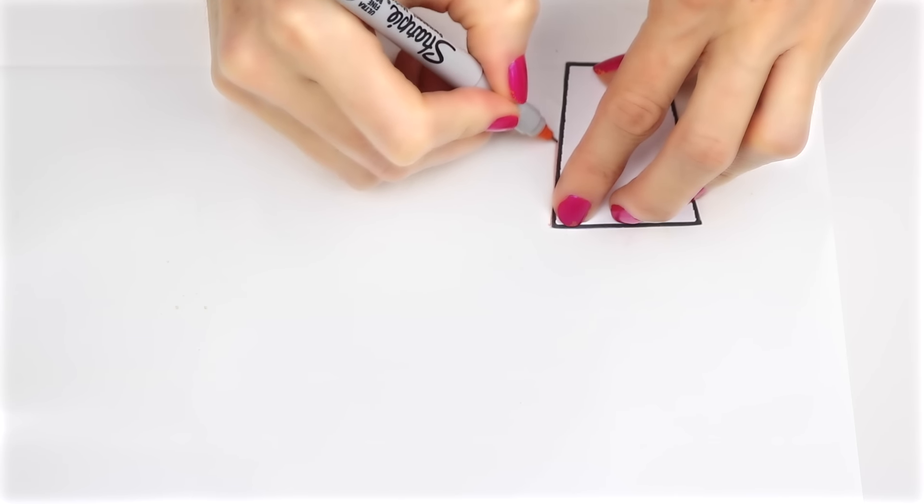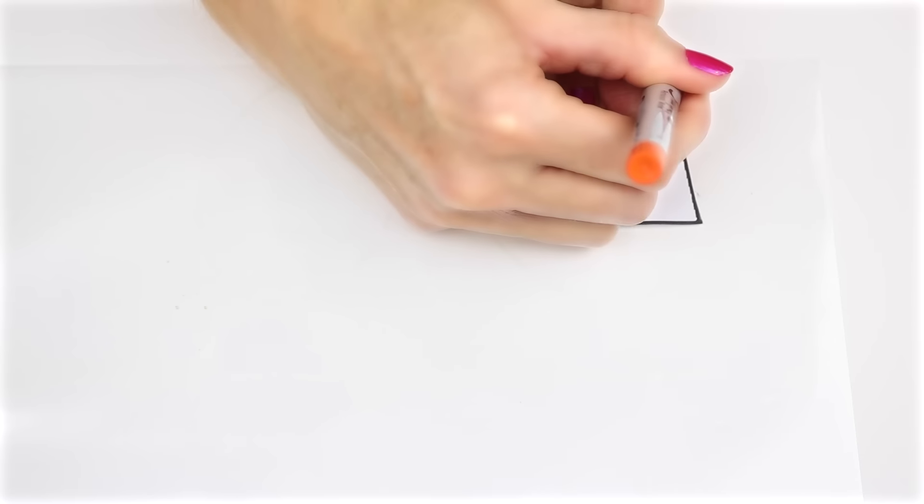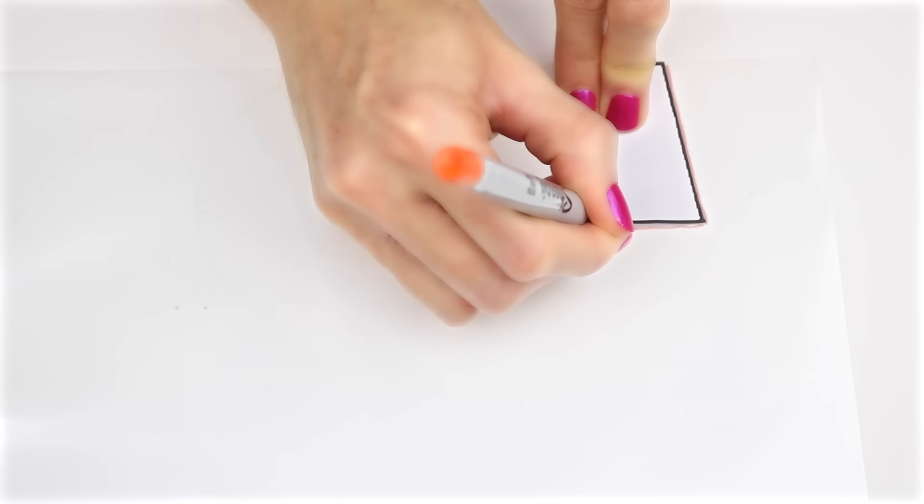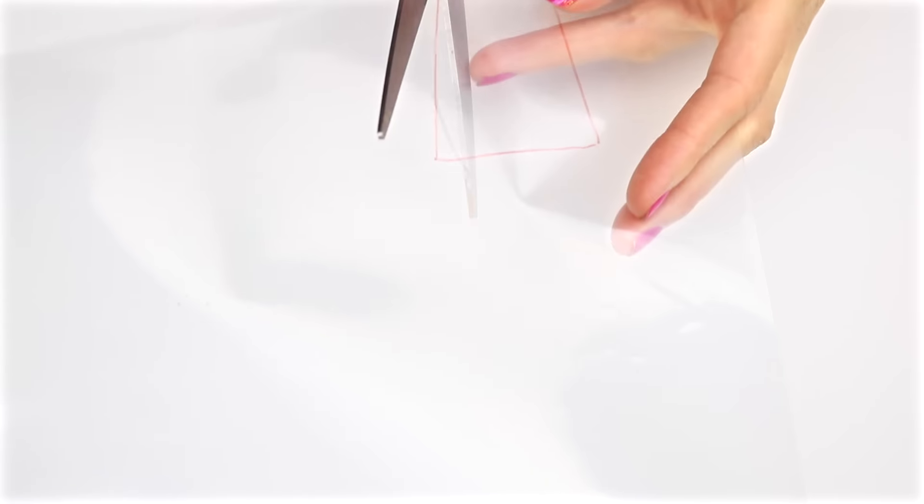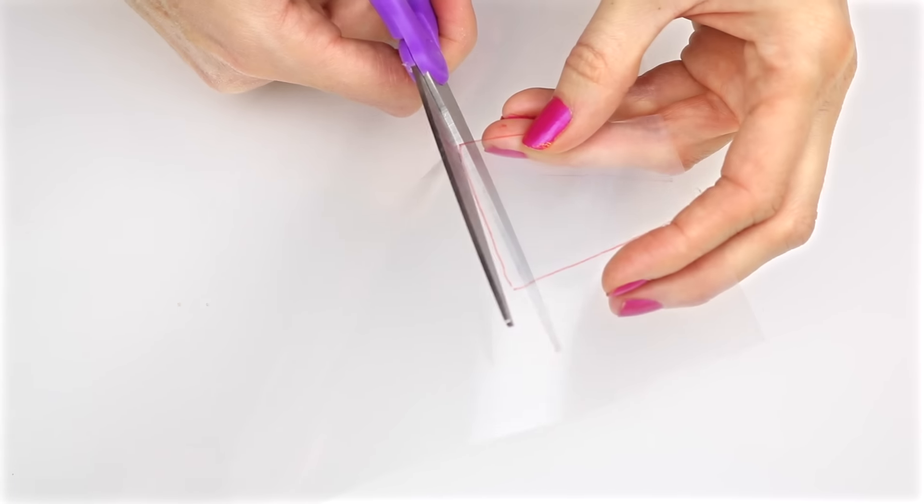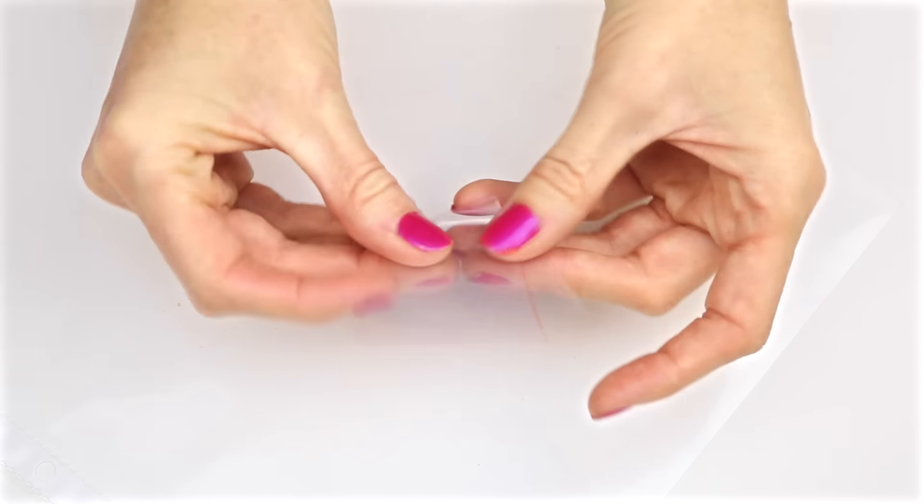Trace out the cup onto the sheet protector. I used the edge of the sheet protector that was already sealed as the bottom of the cup. Cut out the cup image. If there's any marker left on it, you can use some rubbing alcohol to remove it.